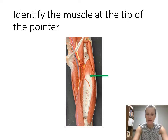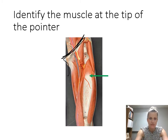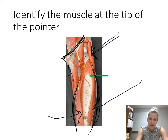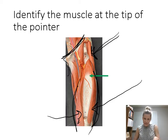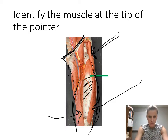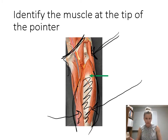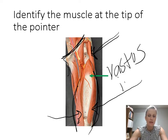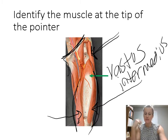This is showing the front of the thigh again. You can see the tensor fasciae latae up here and the quadriceps muscles — the vastus medialis and vastus lateralis — but the rectus femoris has been removed. There should be a muscle on the front of the thigh, but we've removed the rectus femoris, and now you can see the muscle underneath. Remember, the muscle underneath is the vastus intermedius — the intermediate one.